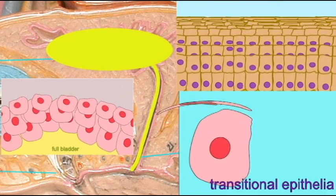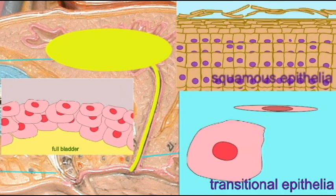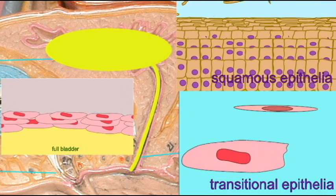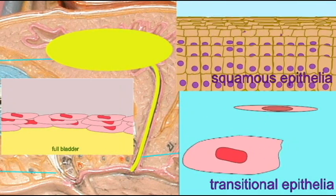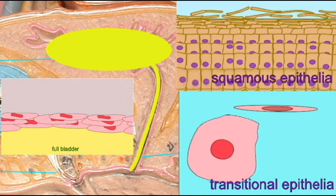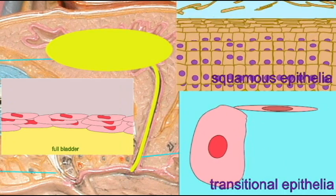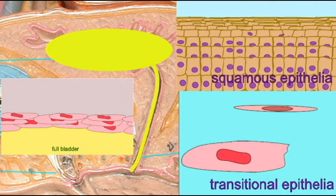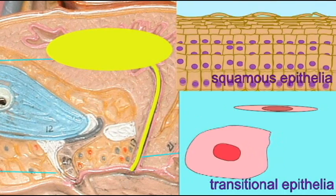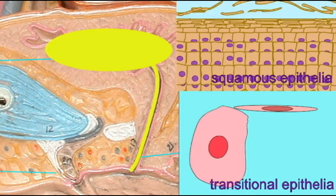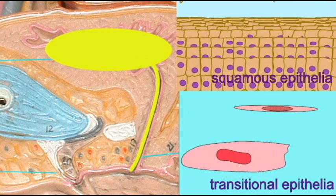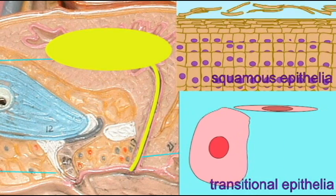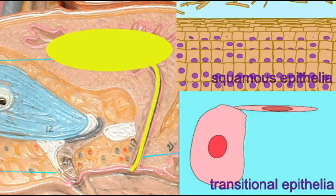Squamous epithelial cells can result from the stratified squamous epithelium lining the urethra. These are normal constituents in urine and are not indicative of any disorder.